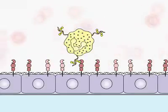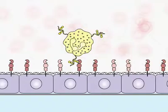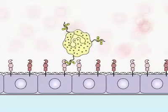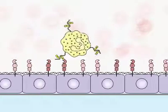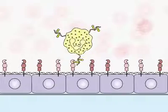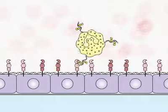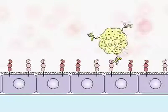The binding of the endothelial selectins to S-lex is weak and cannot hold the cell against the flow of blood. Instead, the cell rolls along the wall of the blood vessel, making and breaking many interactions with the selectins.